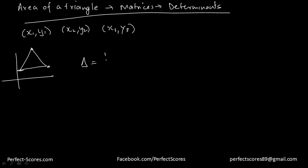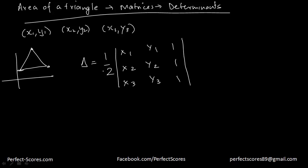That would be the value of half of the determinant of the matrix with columns x1, x2, x3 in the first row; y1, y2, y3 in the second row; and 1, 1, 1 in the third row. The value of this determinant is going to give us the area of the triangle.